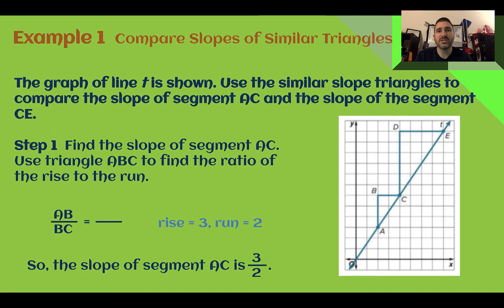Example one, compare slopes of similar triangles. The graph of line T is shown. Use the similar slope triangles to compare the slope of segment AC and the slope of the segment CE. So first let's find the slope of segment AC. So here's AC right here. We're going to use the triangle ABC to find the ratio of the rise to the run. So AB has a rise of three, up three, and a run of two. So the slope of this segment right here is three over two.